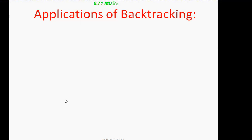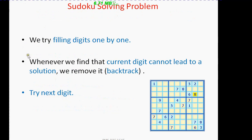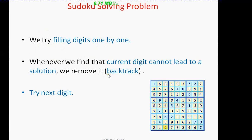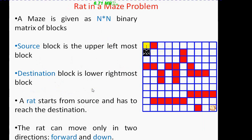Backtracking leads to some very interesting applications and problem solving. One application is Sudoku — a numbering game where we fill a table based on certain conditions. For example, we generate numbers from one to nine for each row and column. We fill the digits one by one. If a number does not satisfy the condition, we backtrack and try the next digit. This is the backtracking technique applied to Sudoku.